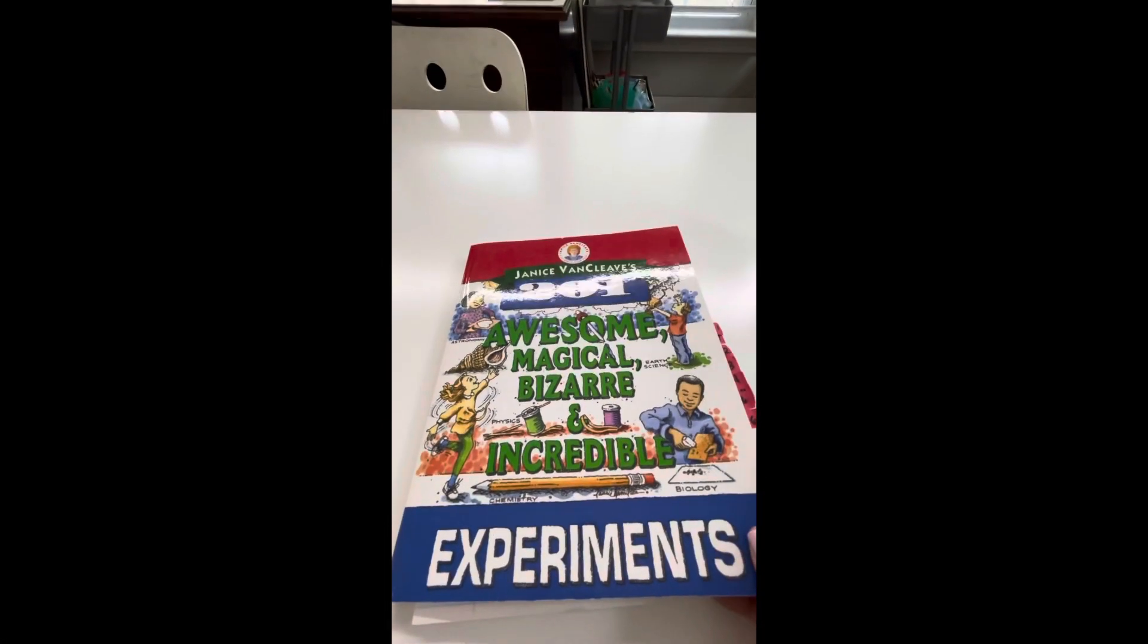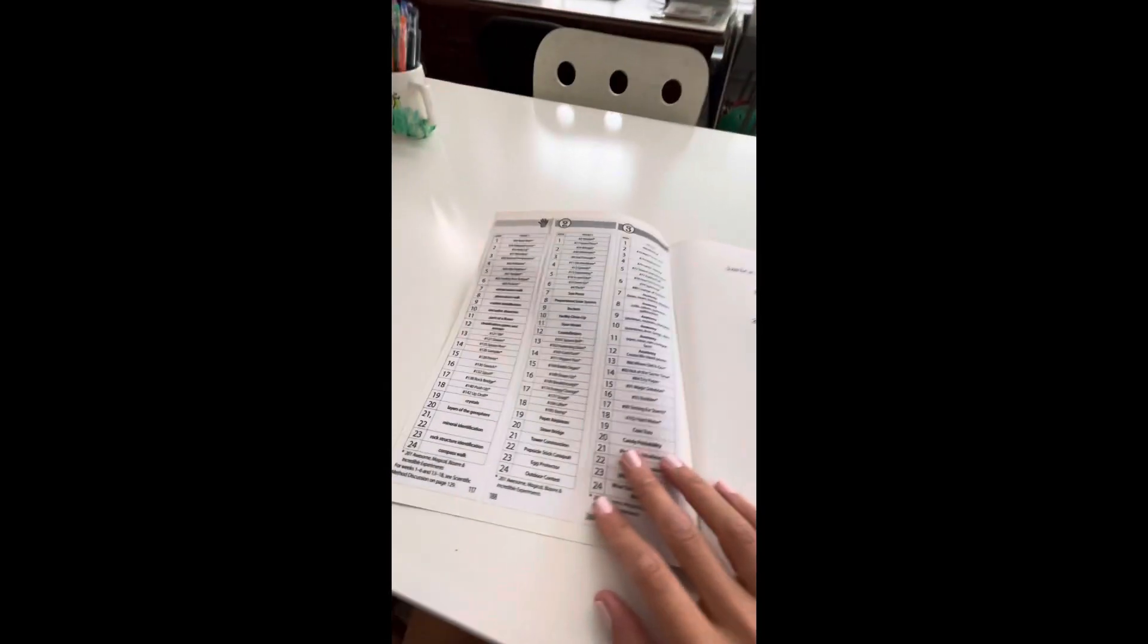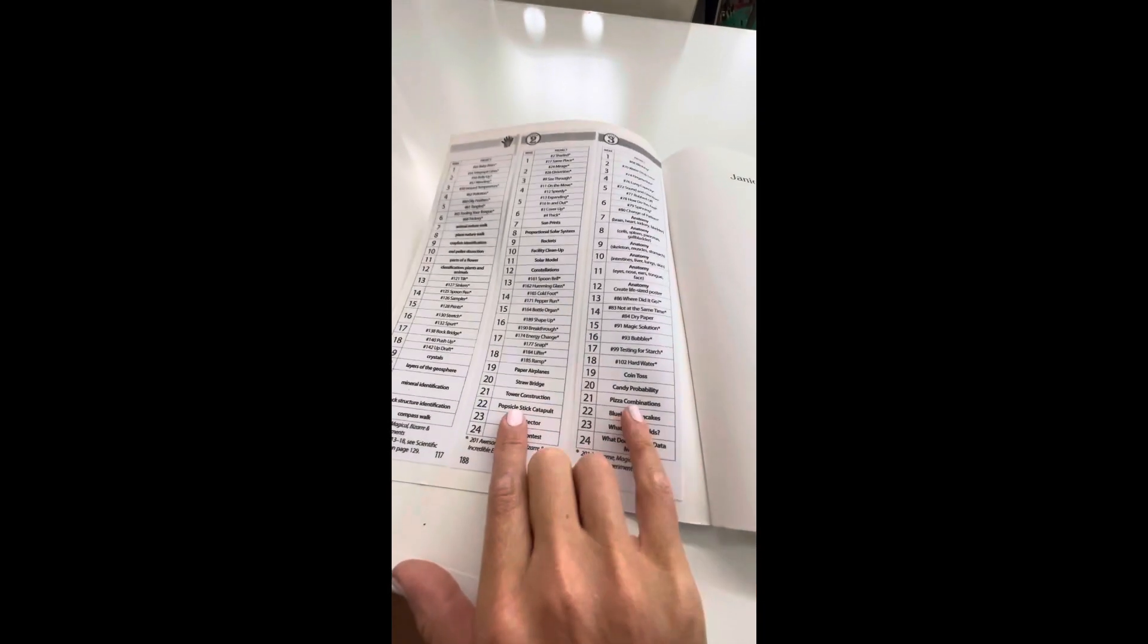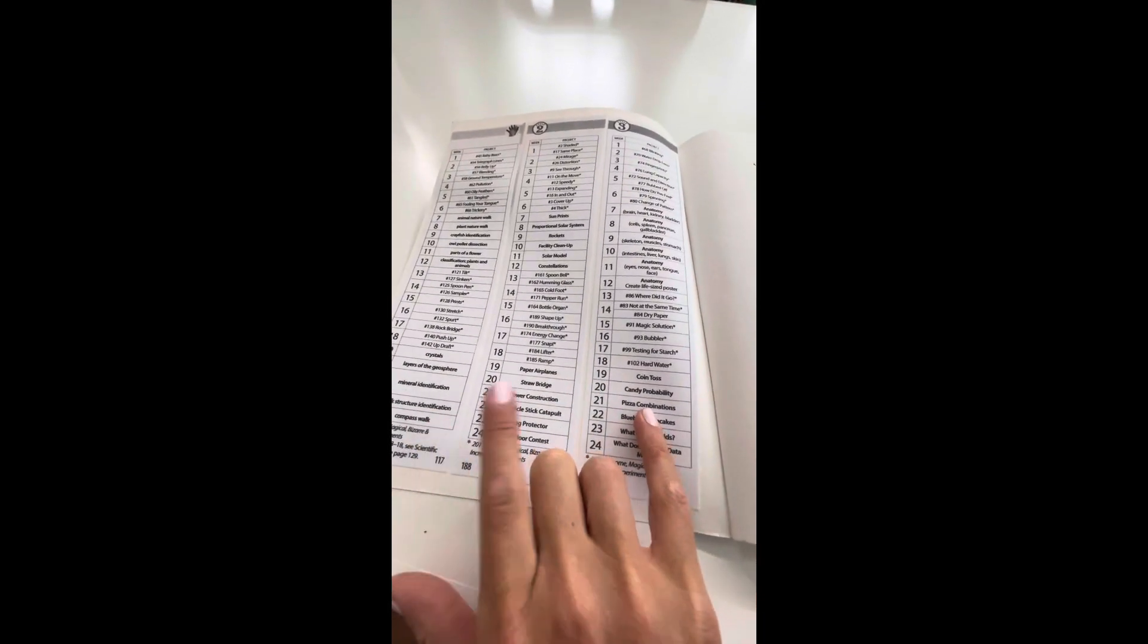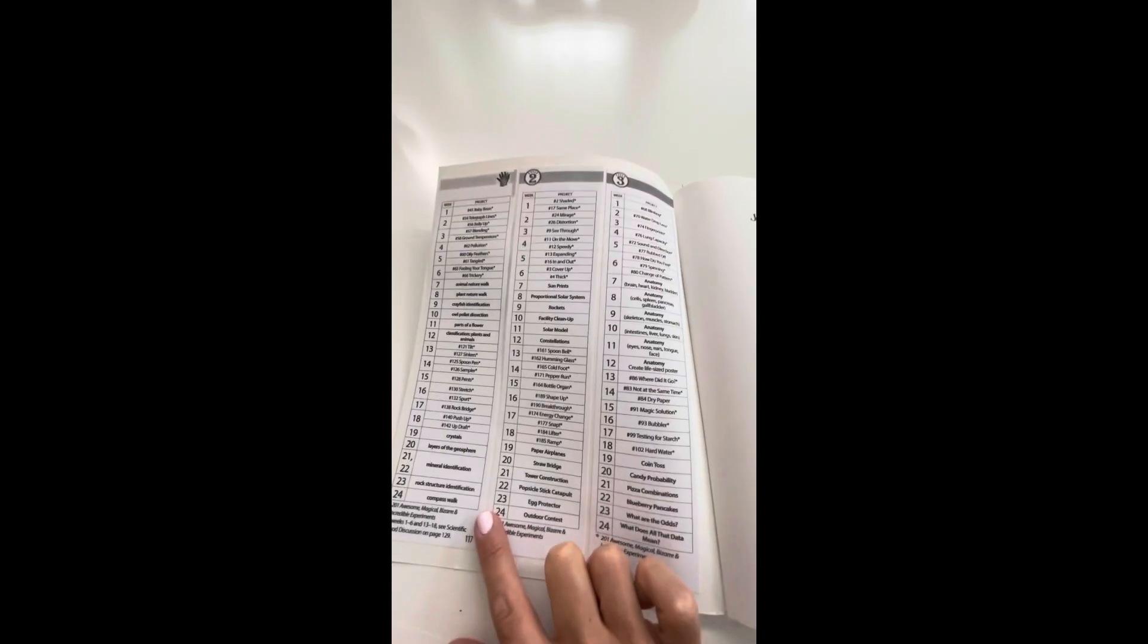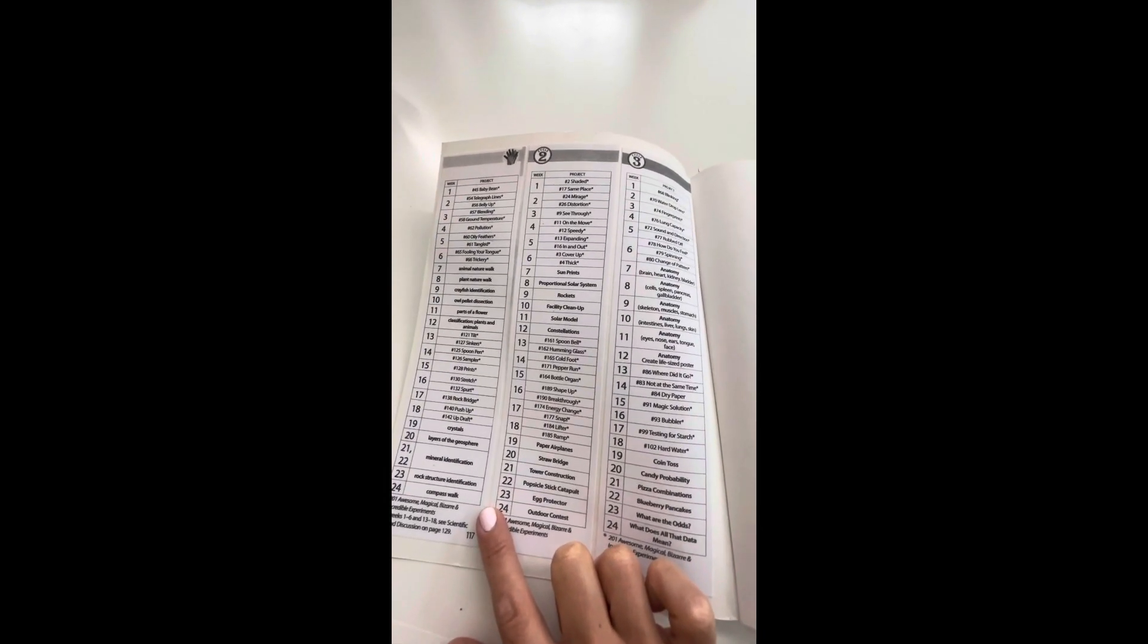Okay. So making a supply list, we'll start with the Van Cleave experiments right here in the front. I photocopied from the foundation's guide all three cycles. And I just pasted it here in the front, just so I have a quick reference of which experiments we're doing.